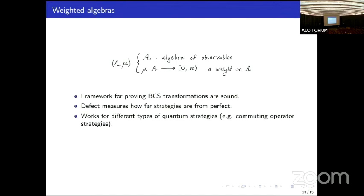The way that we prove these soundness results is using a formalism that we introduced called weighted algebras, where A is an algebra of observables and mu is a weight, finitely supported weight on the algebra. It's a framework for proving that Boolean constraint system transformations are sound. We use the weight to define a quantity that we call the defect, which measures how far strategies are from being perfect. An advantage of this technique is that it works for different types of quantum strategies.